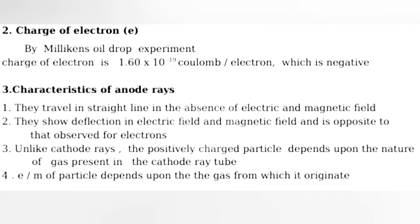Characteristics of anode rays: They travel in straight line in the absence of electric and magnetic field. They show deflection in electric field and magnetic field and is opposite to that observed for electrons. Unlike cathode rays, the positively charged particles depend upon the nature of gas present in the cathode ray tube. Particles depend upon the gas from which it originates.